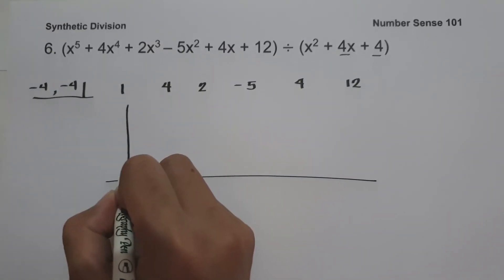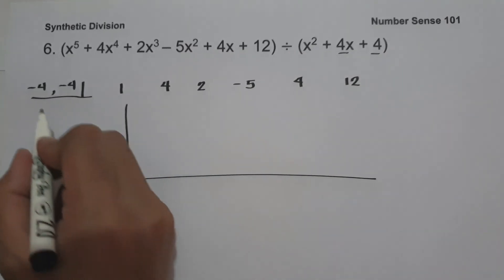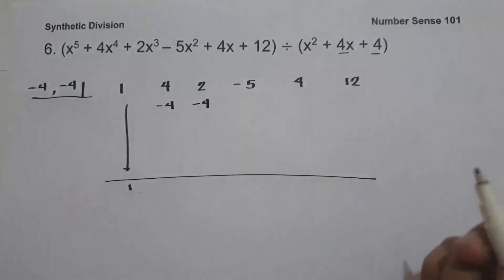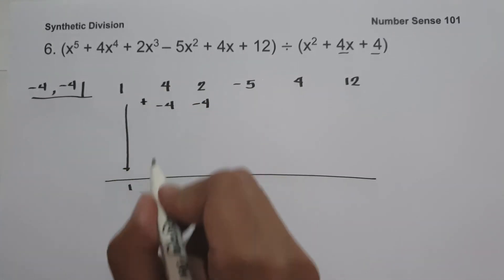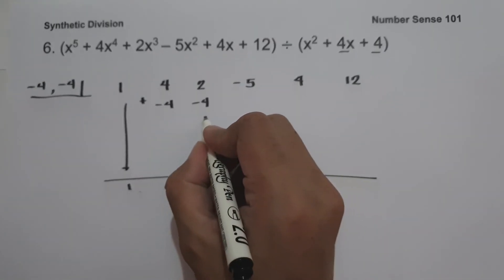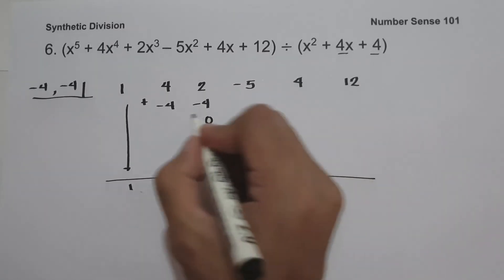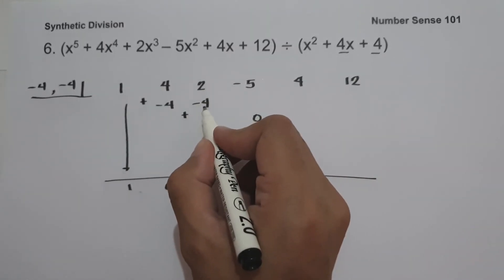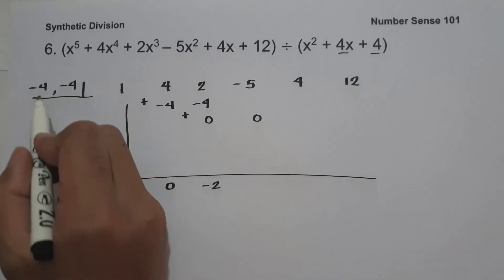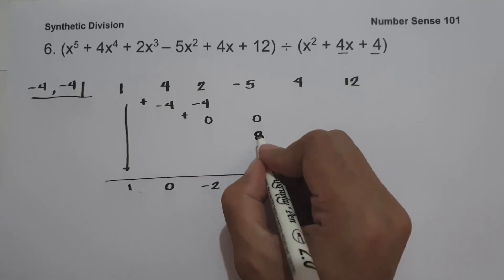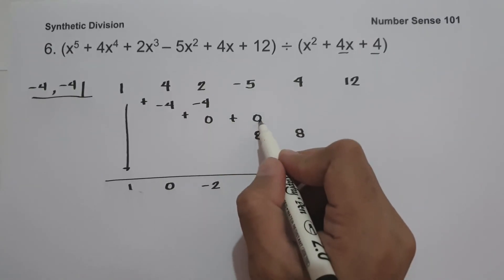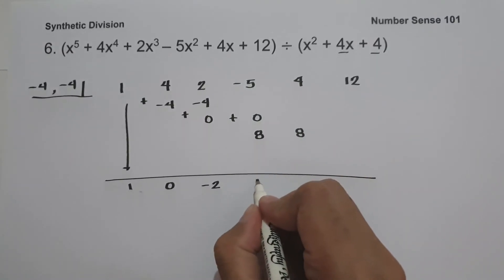We bring down 1. One multiplied by negative 4 is negative 4, and also negative 4. Four plus negative 4 is 0. Zero multiplied by negative 4 and negative 4 is 0 and 0. So 2 plus negative 4 plus 0 is negative 2. Negative 2 multiplied by negative 4 and negative 4 gives positive 8. Negative 5 plus 0 plus 8 is 3.